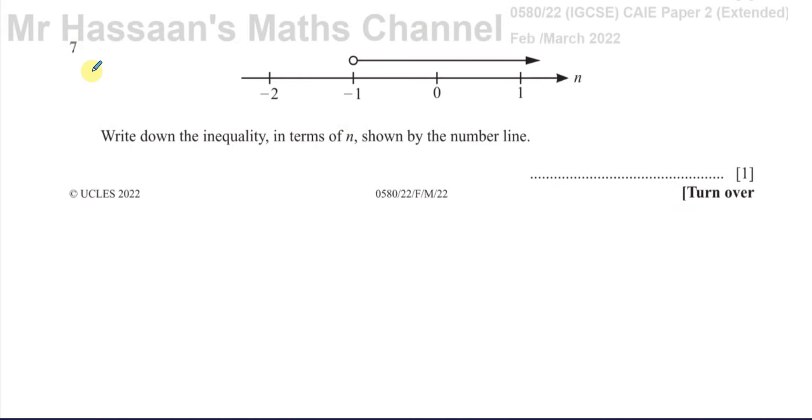Welcome back. I've now got to question number 7 from the February-March 2022 IGCSE paper 2, Cambridge 0580 paper. This is a very simple little question about inequalities. It says, write down the inequality in terms of n shown by the number line.